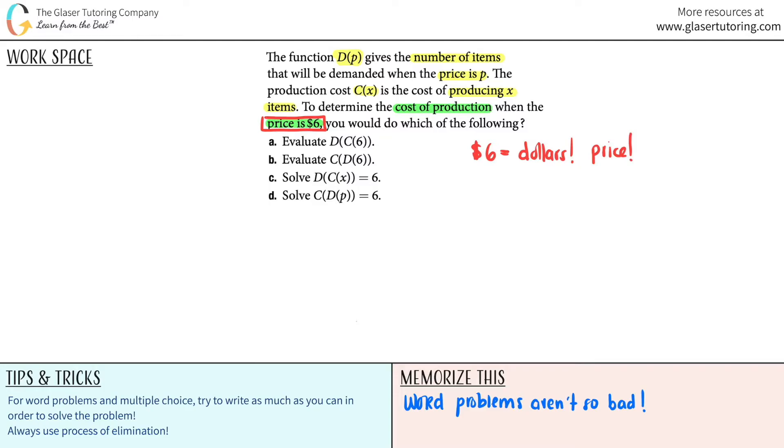So we need to plug in this 6 into one of these functions, and only one of them would work properly. Are we going to plug in this 6 for the d function?